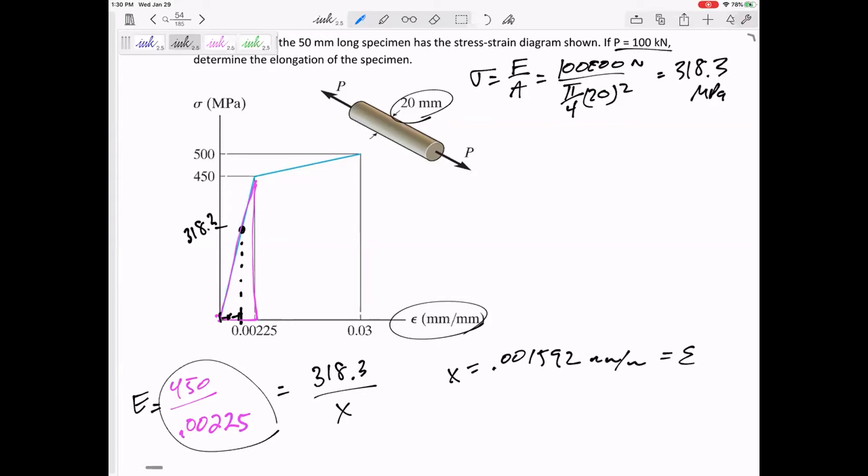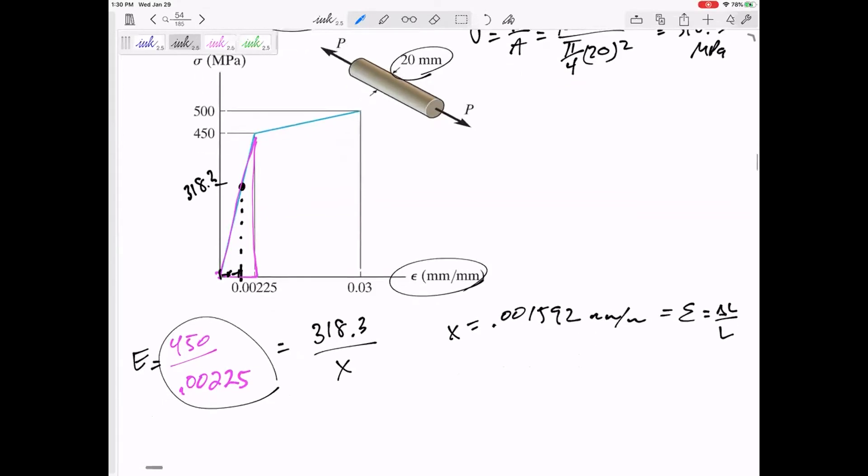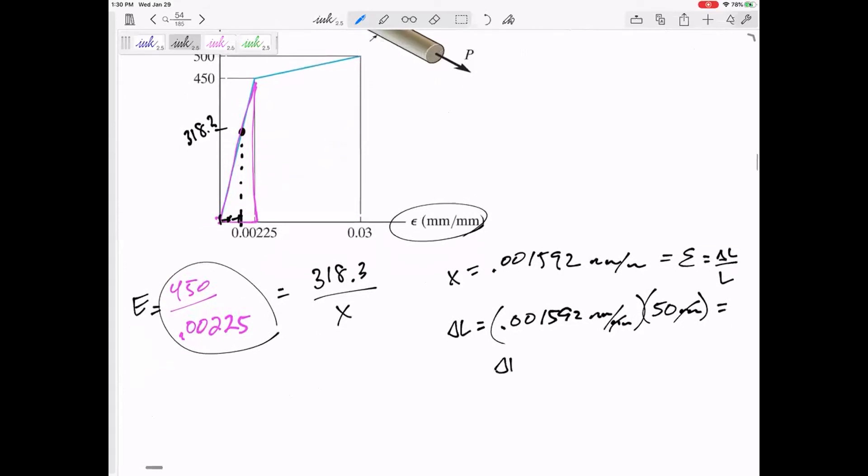Did the question ask for the strain? The question asked for the elongation. I know this is delta L over L. So if I want to find delta L, I need to take this 0.001592 and multiply it times the length, the original length, 50 millimeters. And because I know my units, 0.0796 millimeters.